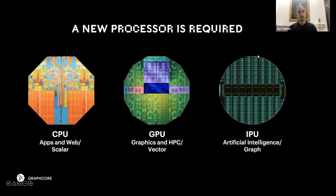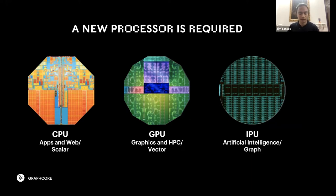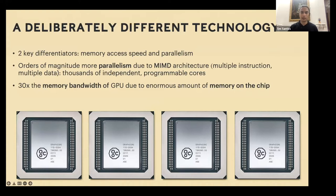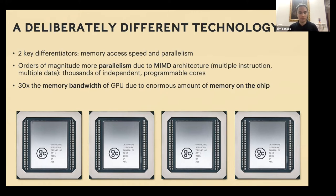A new processor is required. CPUs are ideal for scalar compute; GPUs are ideal for vector-type matrix multiplication. That's why we created the Intelligence Processing Unit — for AI, which involves more of a graph-type compute. There are two key differentiators of the IPU: very high memory access speed, with a large chunk of in-processor memory so you get data almost instantaneously, and within-chip parallelism. I'll show the memory access throughput later.